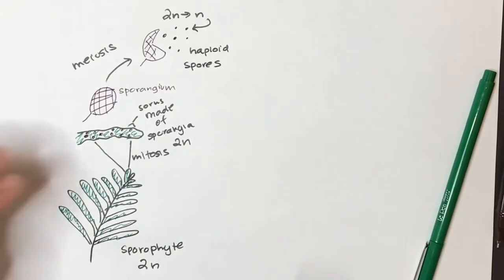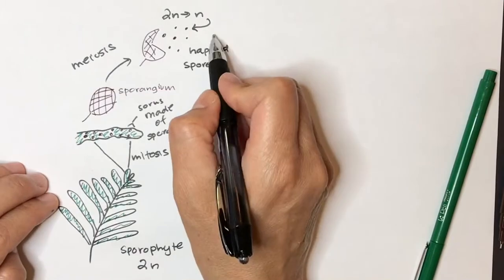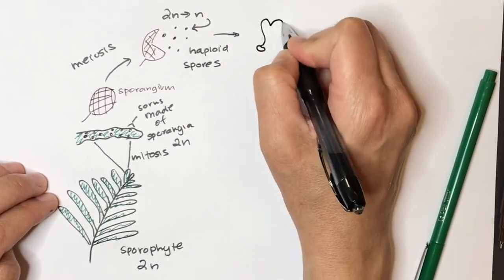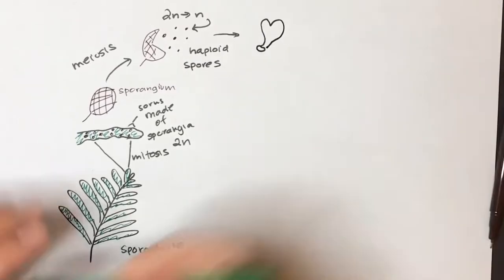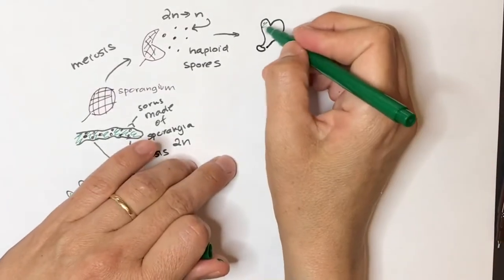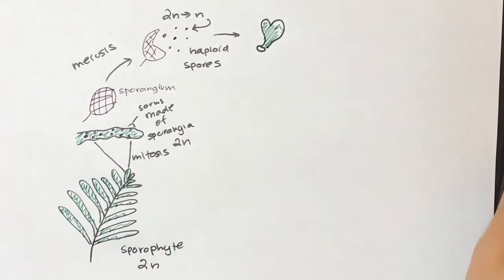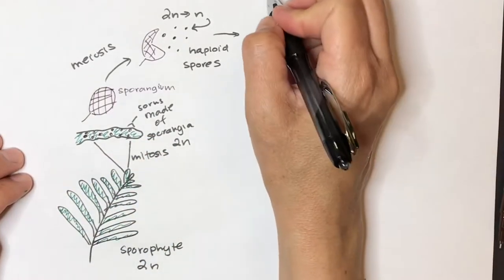So these spores will disperse and the spores will settle down on the soil and they'll make a little gametophyte. So the little gametophyte is another green part of the plant. And since it's coming about from mitosis of tissue that is haploid, it's also haploid.